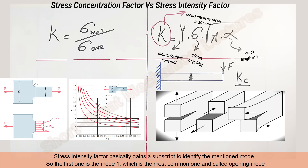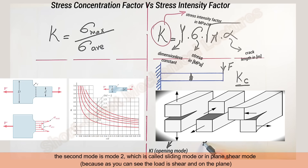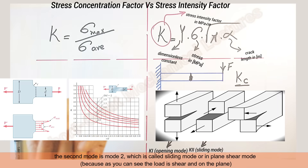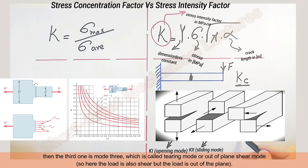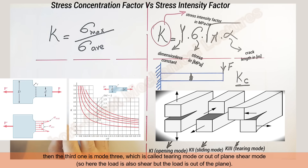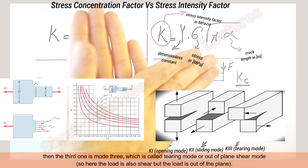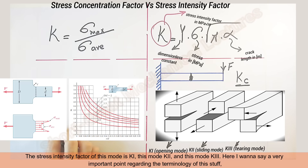The stress intensity factor gains a subscript to identify these modes. Mode 1 is the most common one, called the opening mode. Mode 2 is called the sliding mode or in-plane shear mode — the load is shear and on the plane. Mode 3 is called the tearing mode or out-of-plane shear mode — the load is also shear but out of the plane. So the stress intensity factor for mode 1 is K_I, for mode 2 it is K_II, and for mode 3 it is K_III.